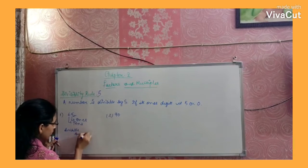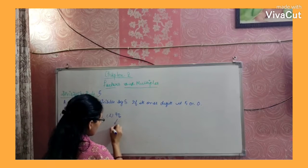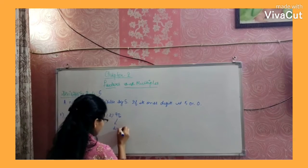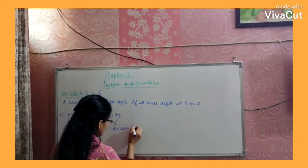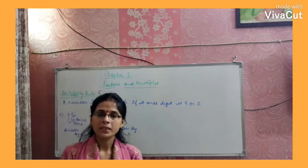While 5. Here is one's digit is 0. What is this? Divisibility 5. I will tell you about divisibility 6.